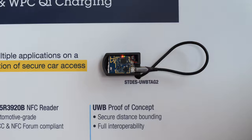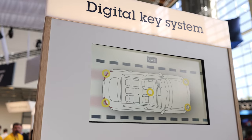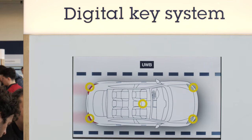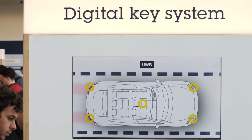The car has multiple ultra-wideband modules, so the vehicle triangulates me as I approach it. I can unlock the car door without removing my phone from my pocket or my bag. To lock the door, the procedure is the same.